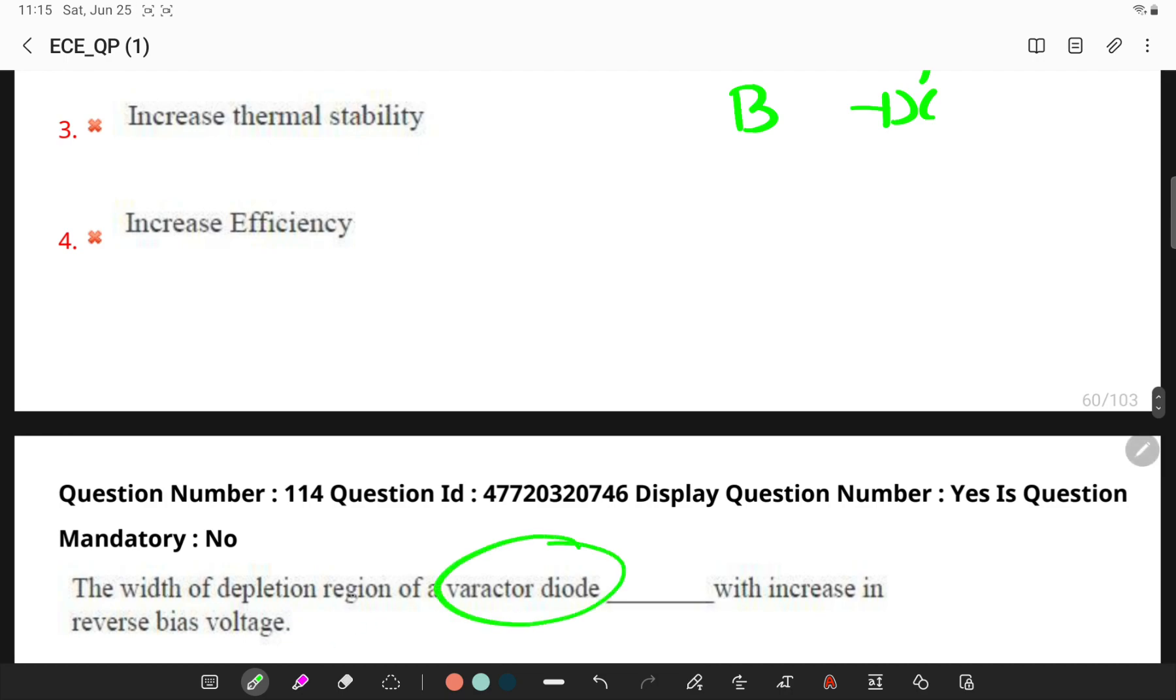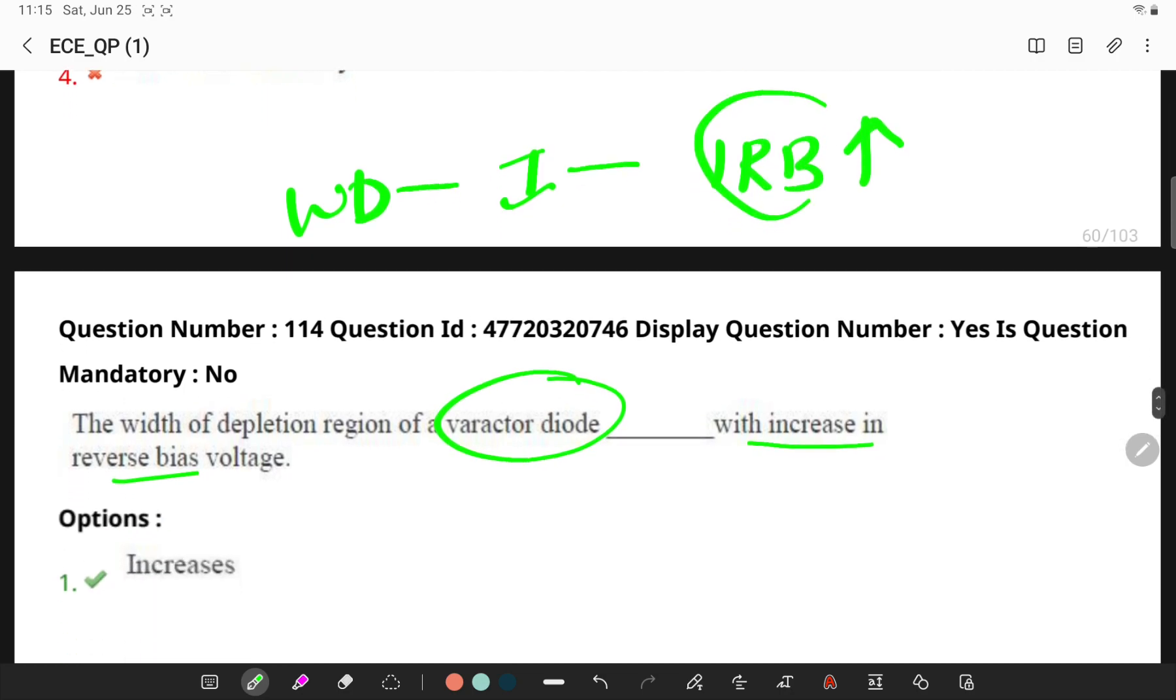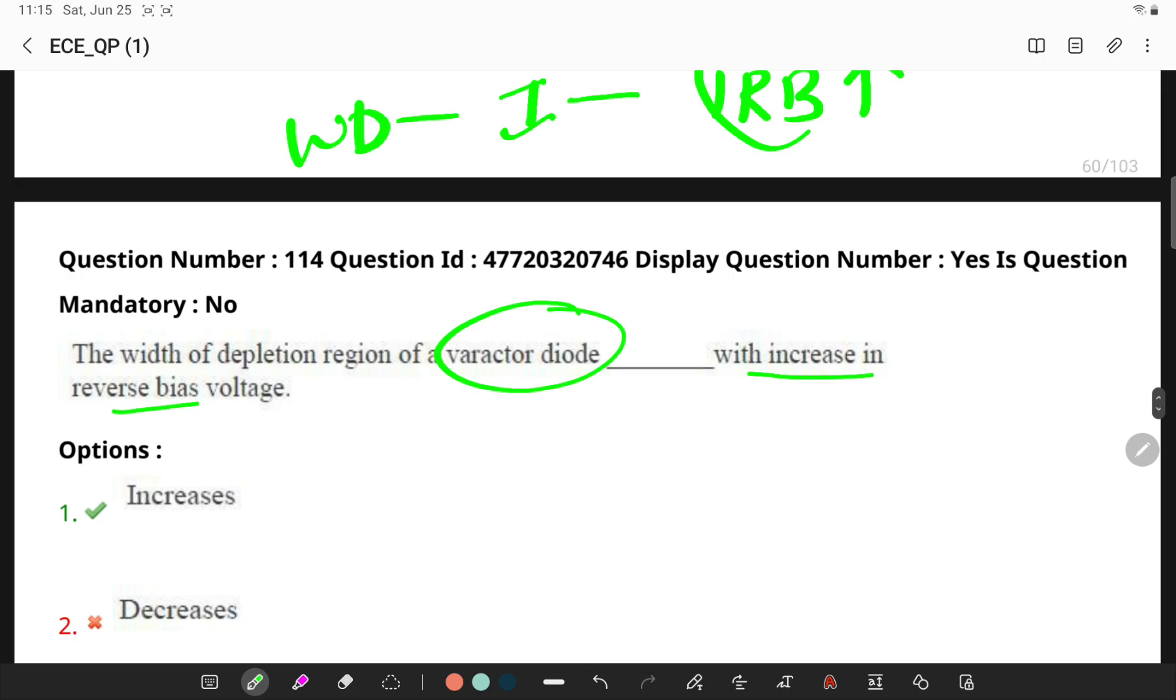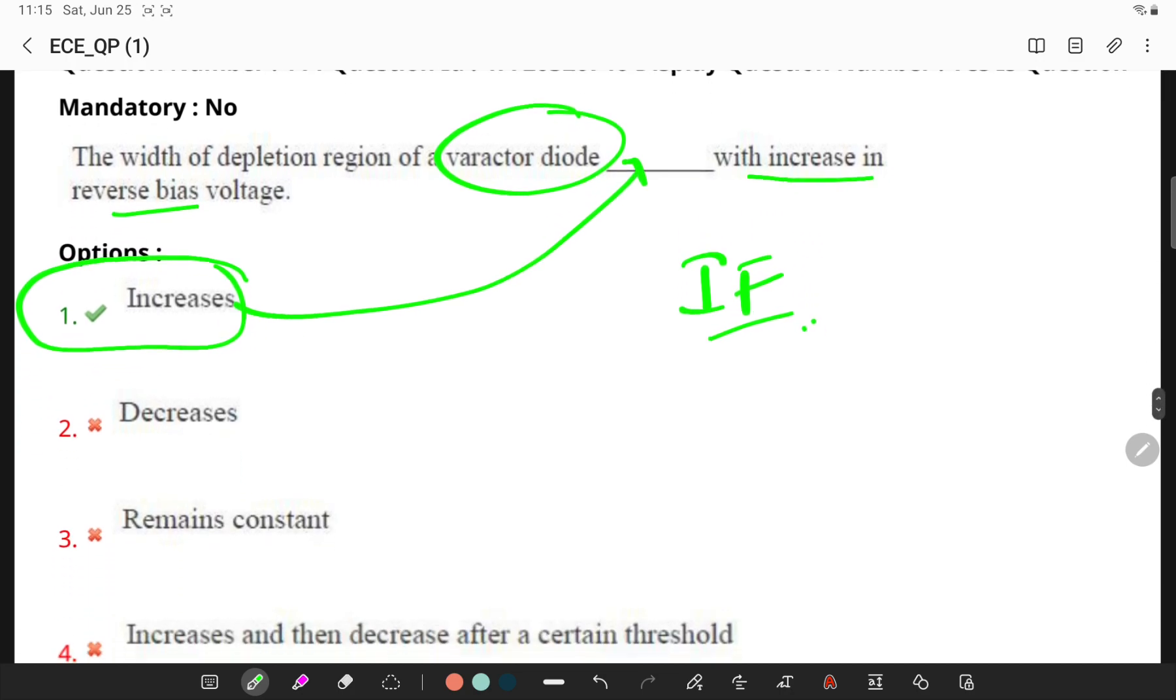The depletion width of a varactor diode, what will happen with increase in the reverse bias? Remember, the width of the depletion region goes on increasing with increase in reverse bias voltage of a varactor diode. As the width of the depletion region is an inverse function for capacitance, the width will be increasing. In this case, the capacitance will also be decreasing. If you observe the answer as per this logic, it will be increasing.